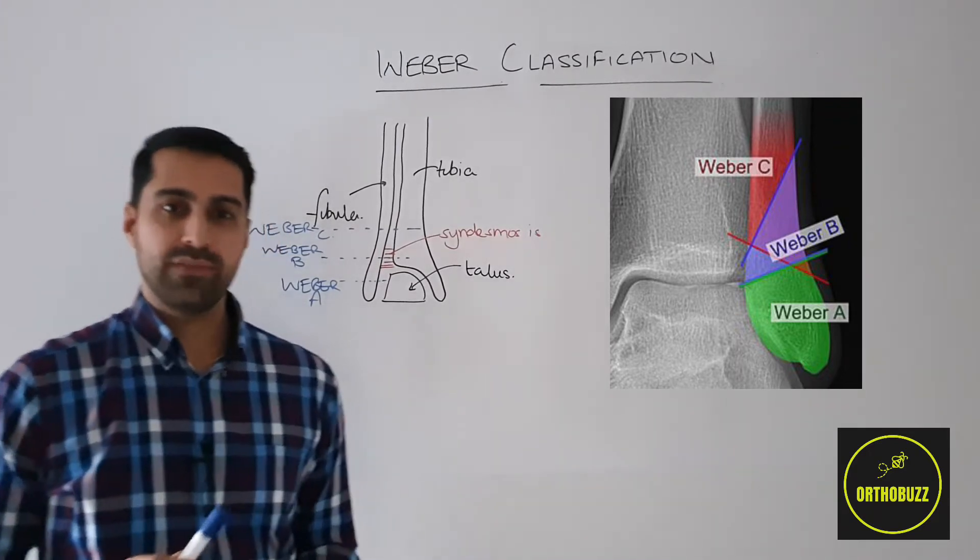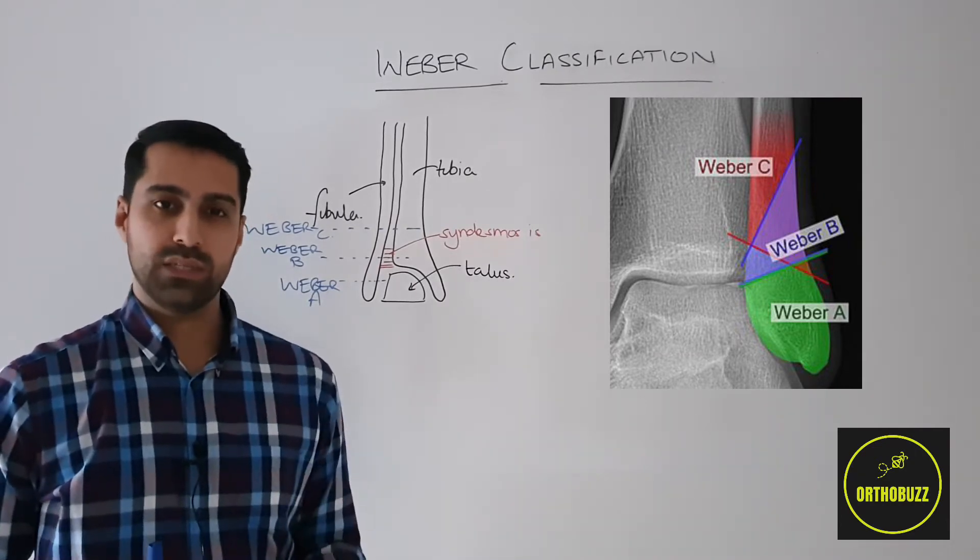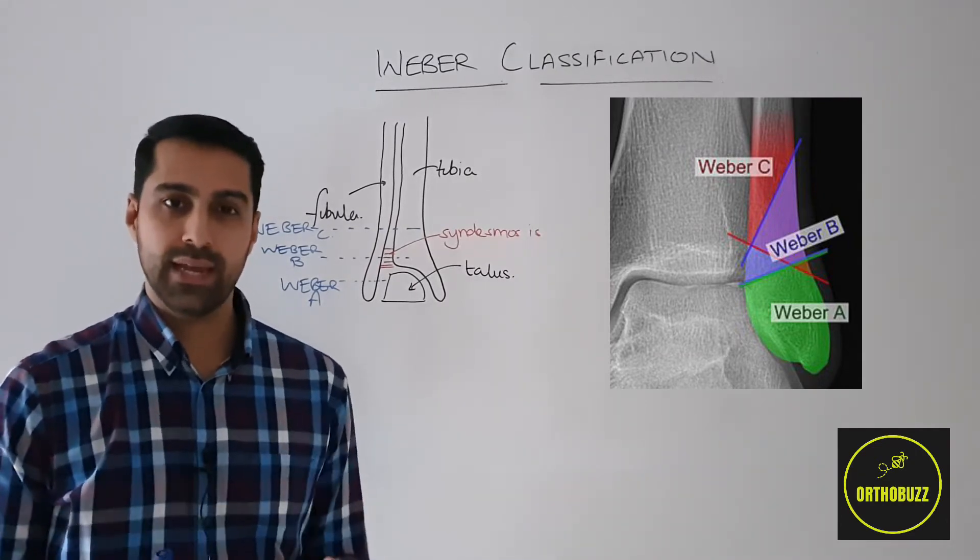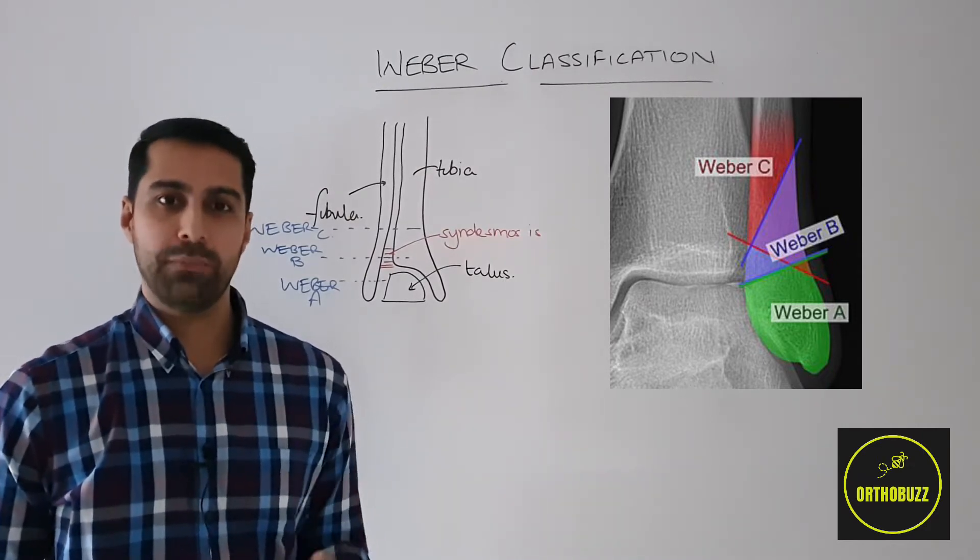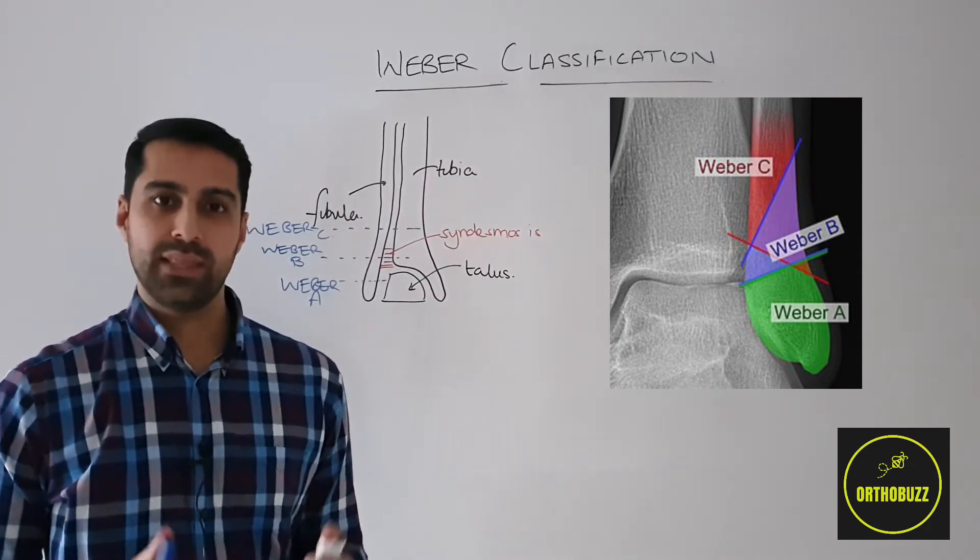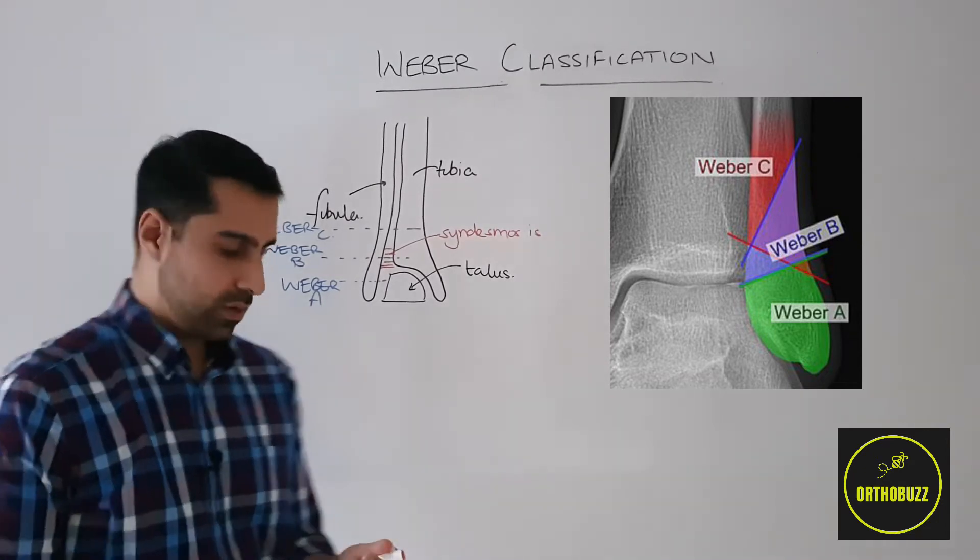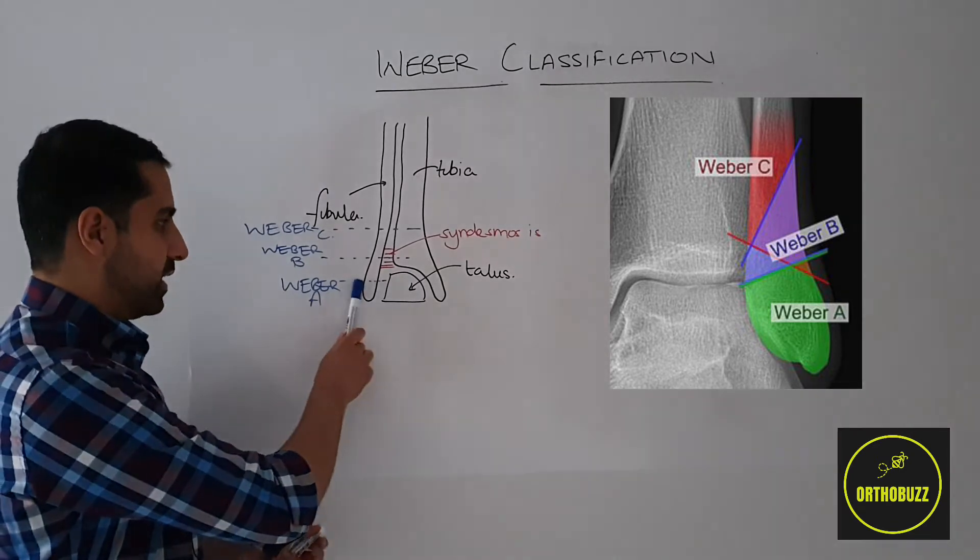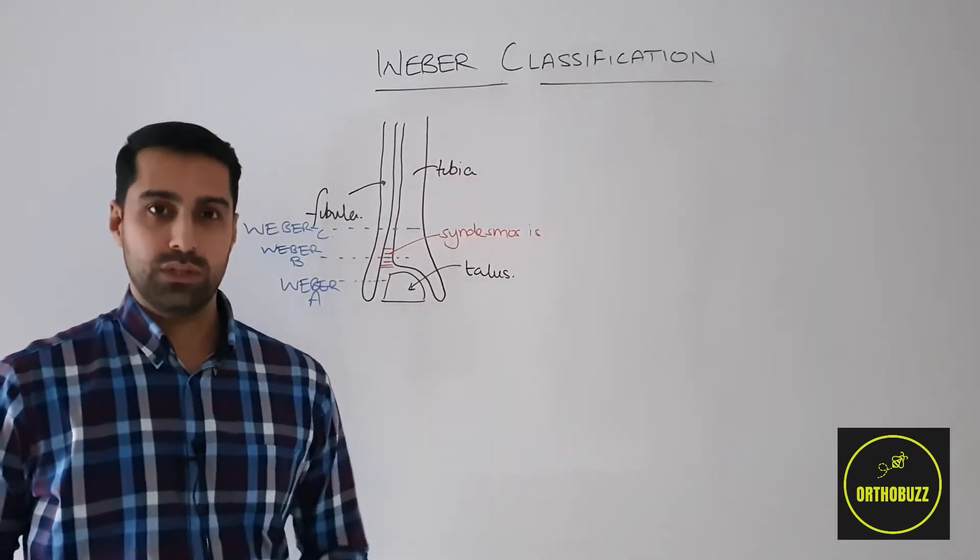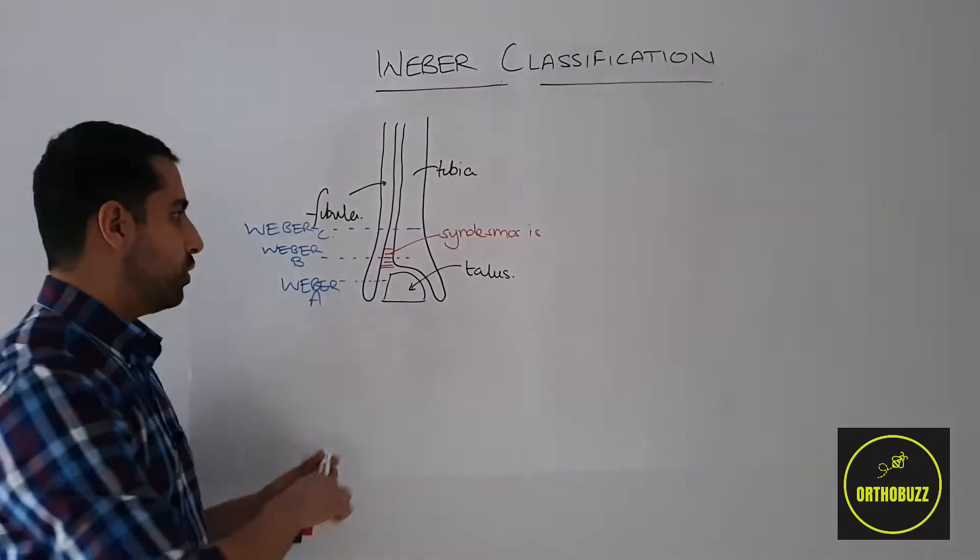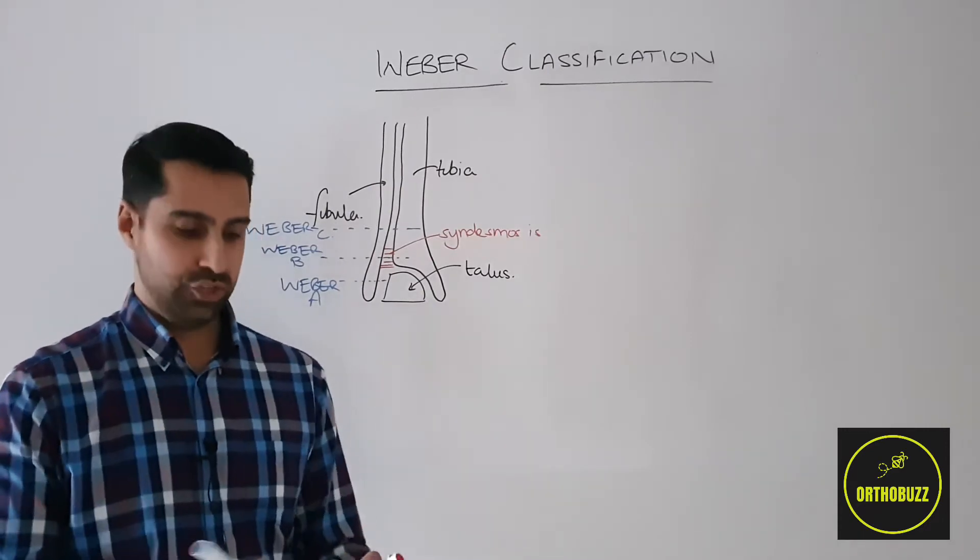The key relevance of the syndesmosis is to ankle stability. If the syndesmosis or the distal tibiofibular joint is intact, this suggests that the ankle will be stable. And therefore the patient can put weight on the ankle and does not need an operation to fix the fracture. So if we can imagine Weber A fractures fracturing the fibula distal to the syndesmosis are not going to involve the syndesmosis. And therefore these are going to be stable injuries.